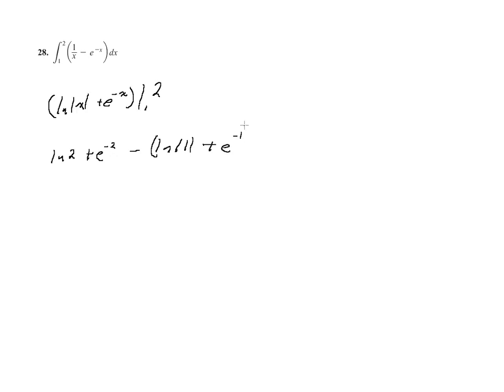And then, so we have the natural log of 2 plus 1 over e squared minus, this is just, the natural log of 1 is 0, so minus 1 over e.